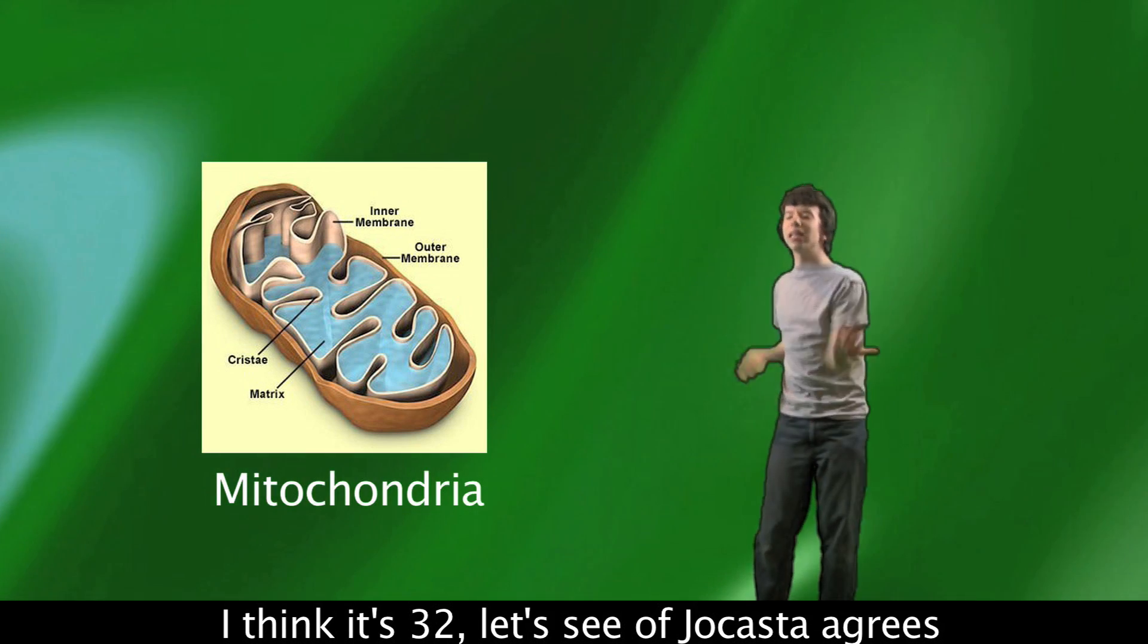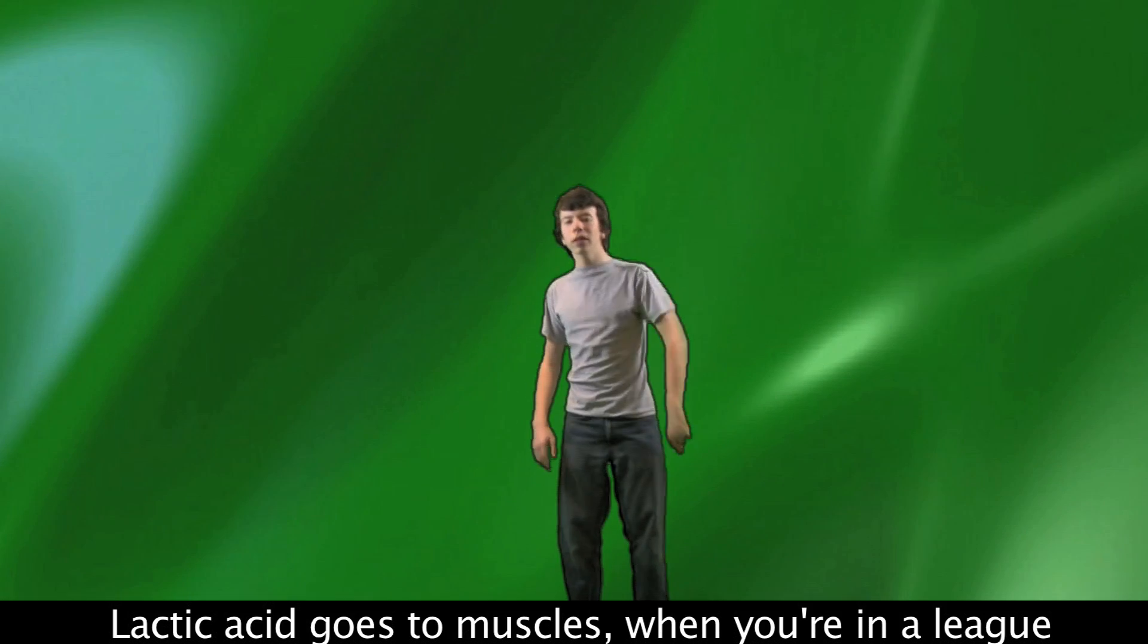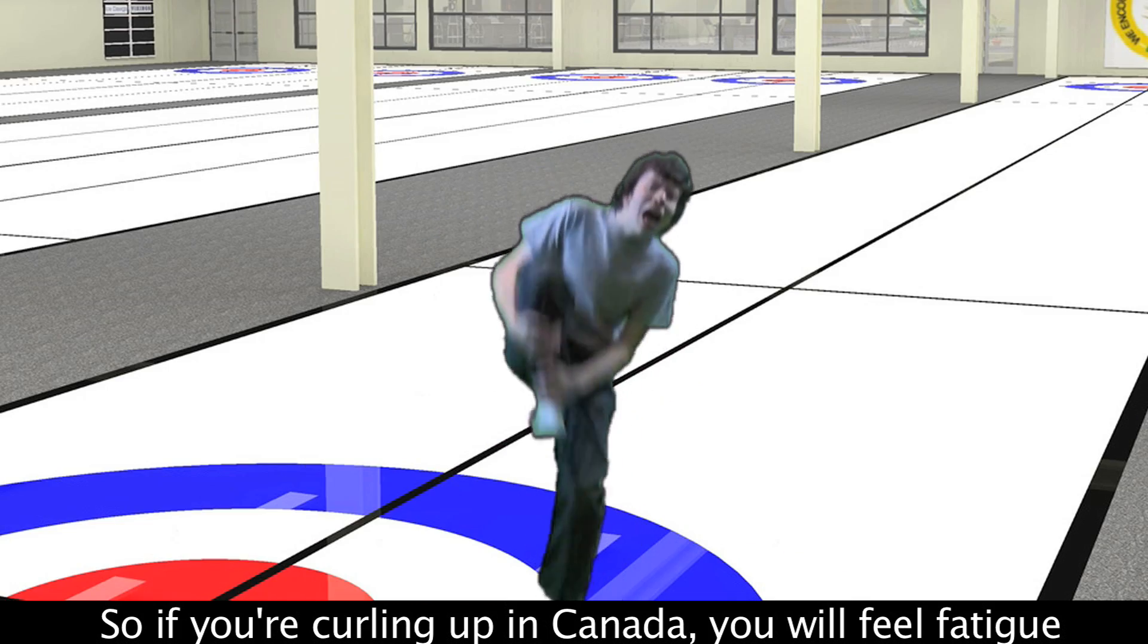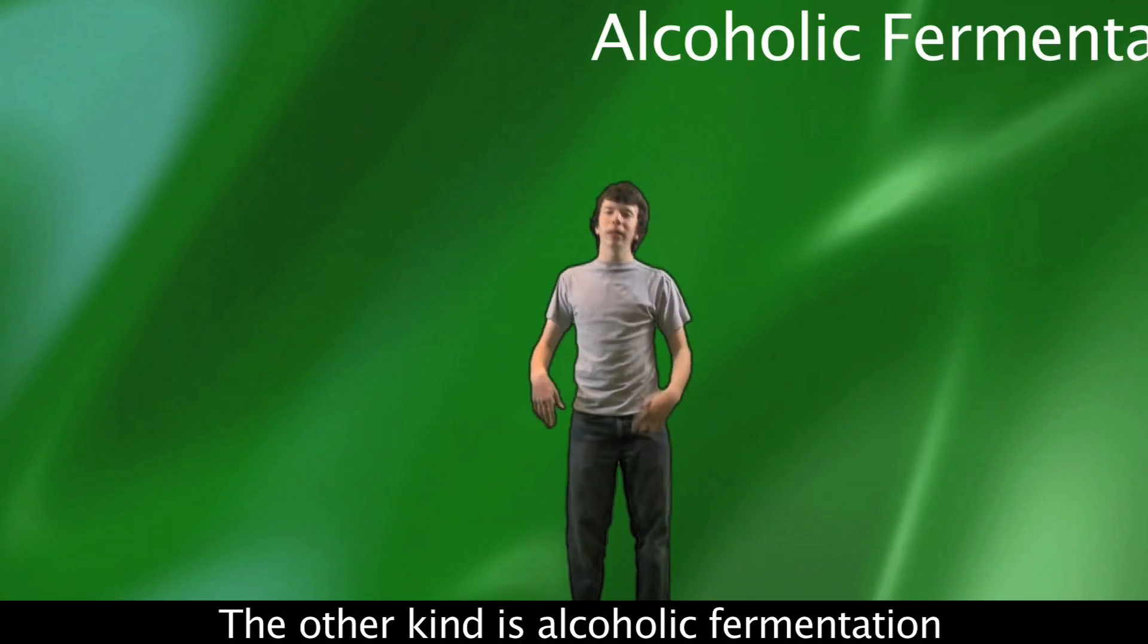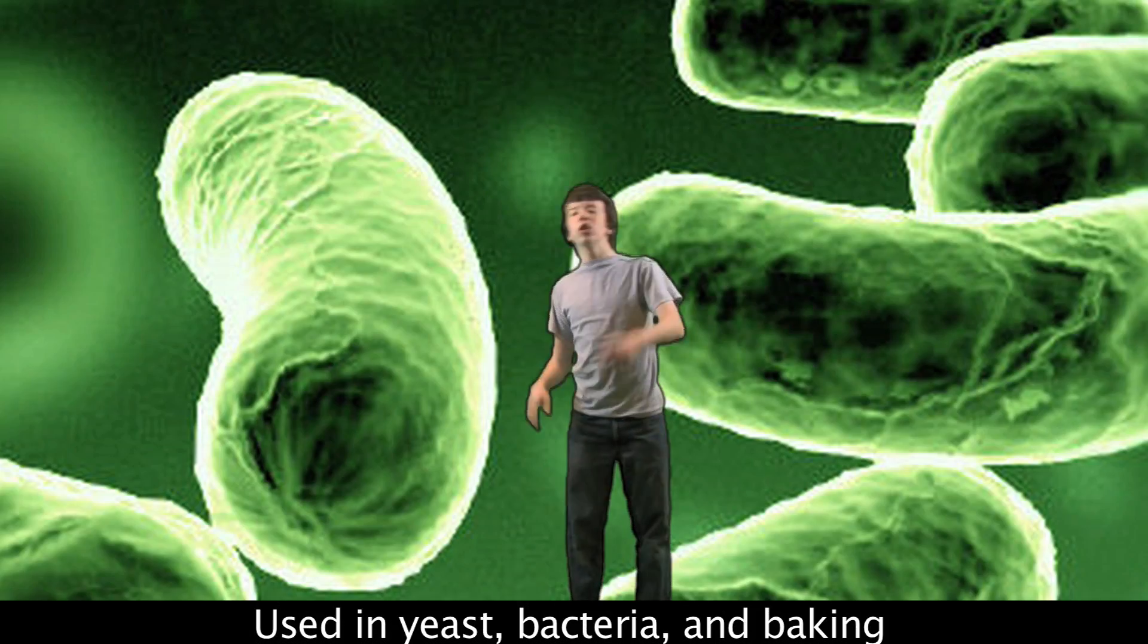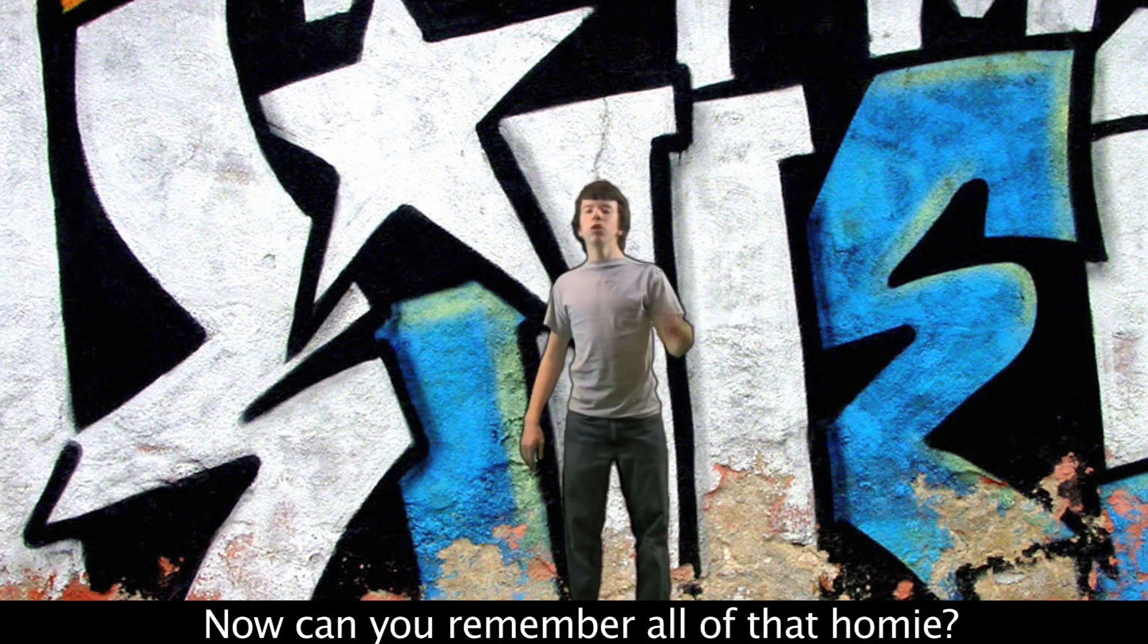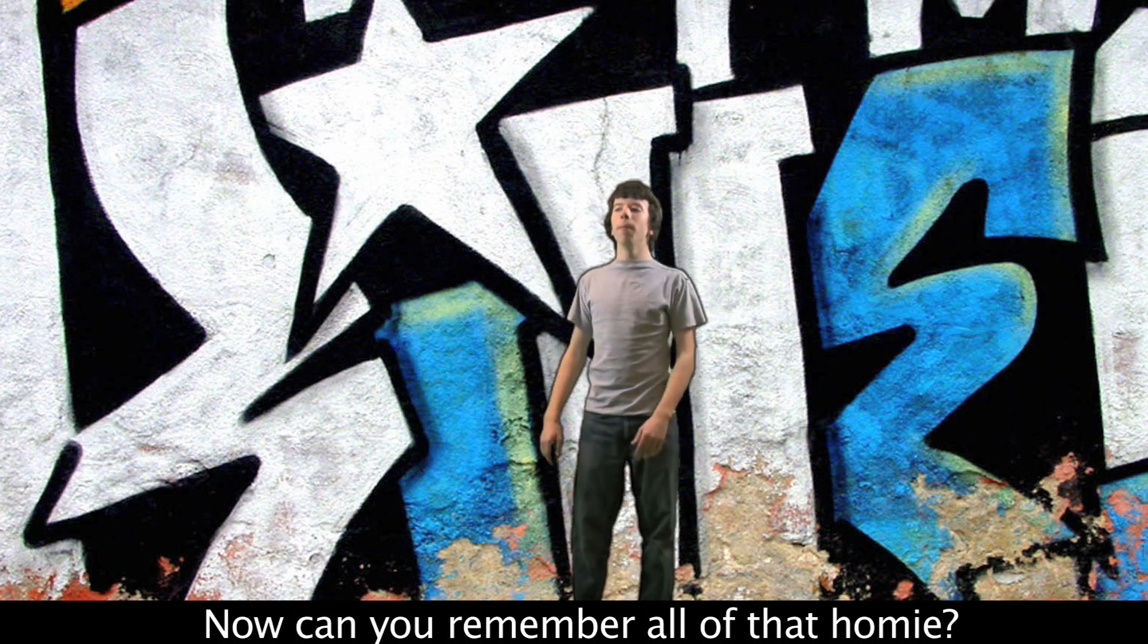let's see if Jocasta agrees. Lactic acid goes to the muscles when you're in a league. So if you're curling in Canada, you will feel fatigued. The other kind is alcoholic fermentation used in yeast, bacteria, and baking. Produces CO2 and 2 ATP. Now can you remember all of that, homie?